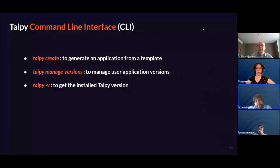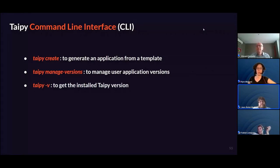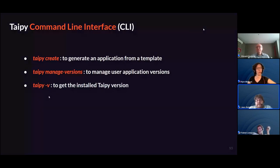I'll demonstrate it right after. The second command is taipai-managed-versions, to manage user application versions. The capability to run multiple versions of your application was already there in version 2.2, but what's new in 2.3 is the CLI — you can now manage your versions through the command line. The third command is taipai-version or taipai-v, to get the installed TaiPai version.